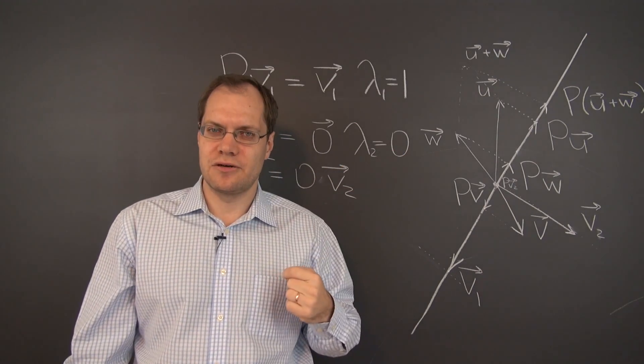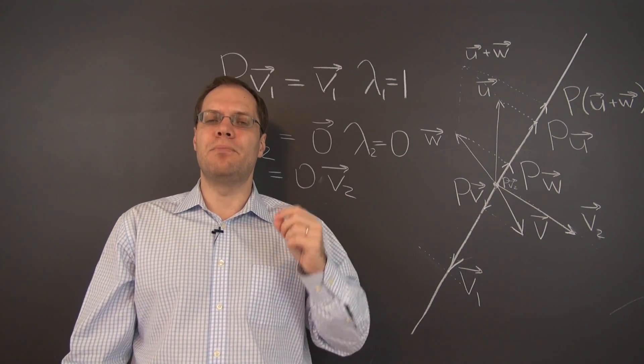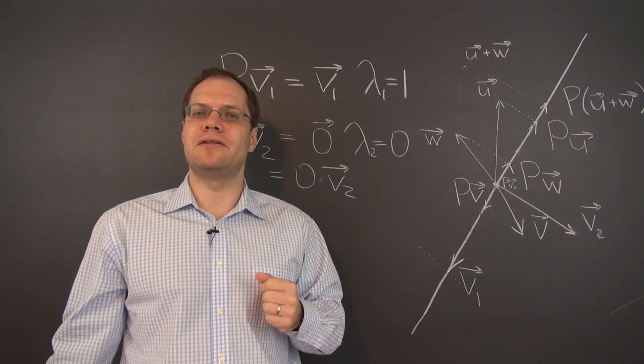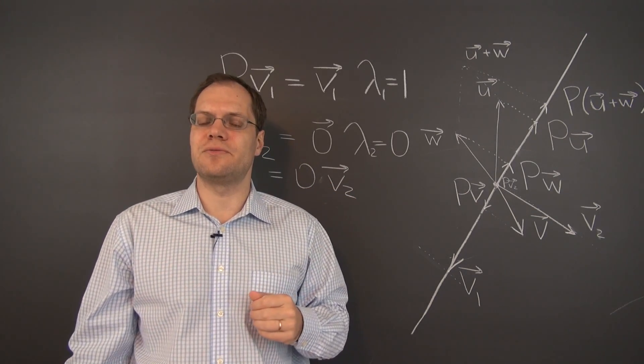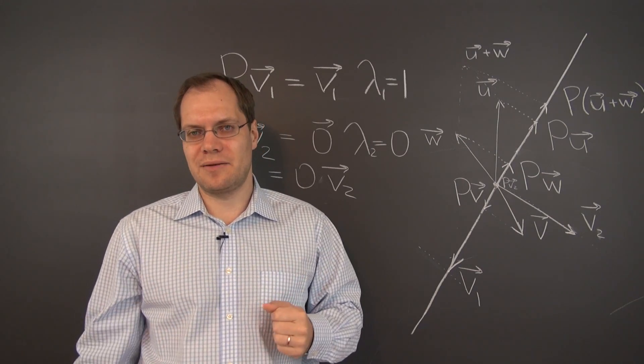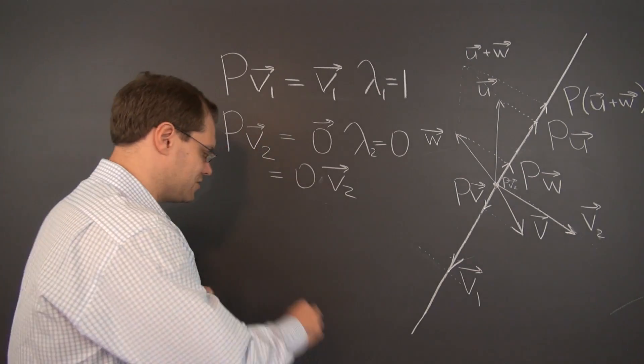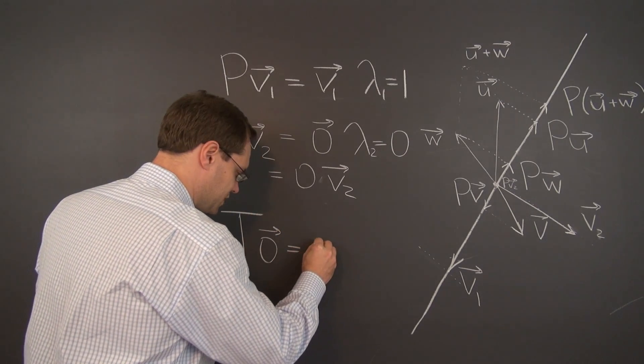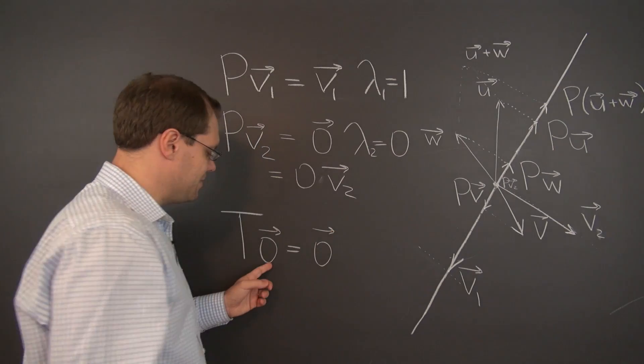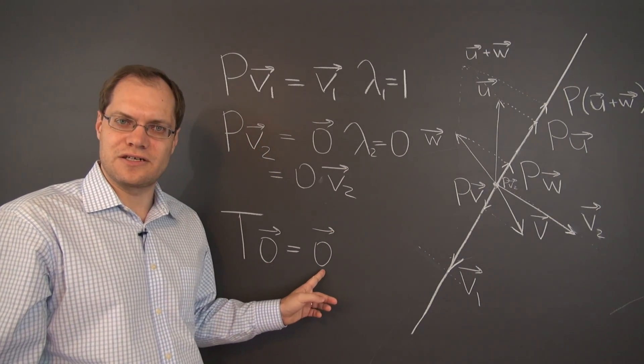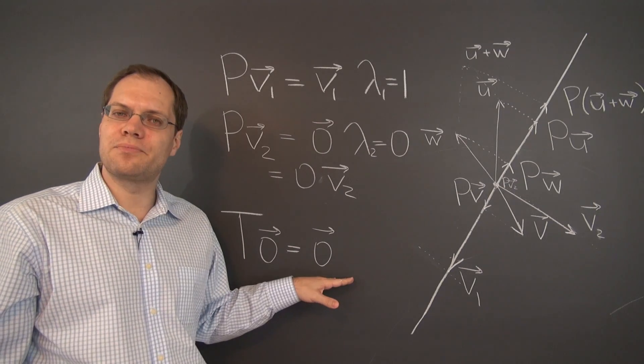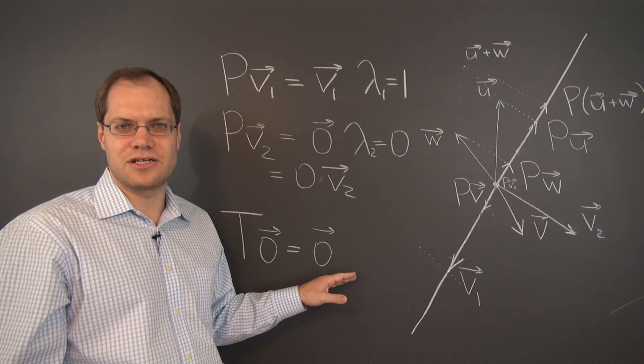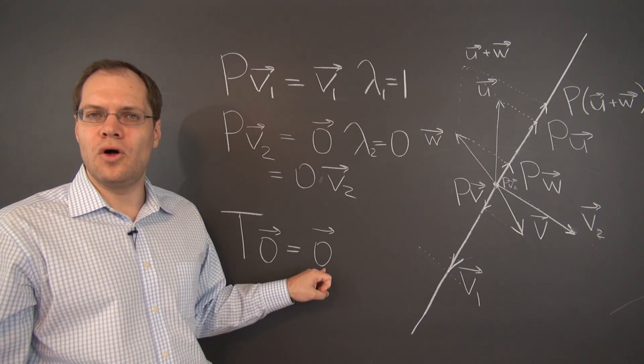Zero is a perfectly legitimate eigenvalue. An eigenvector cannot be the zero vector. The point of eigenvalues and eigenvectors is to learn something about the transformation, to have greater insight into the transformation. And it's true for any linear transformation. You can prove this if you would like. That the image of the zero vector is always the zero vector. This is one of the required properties or it's a consequence of the definition of a linear transformation. So this is always true.